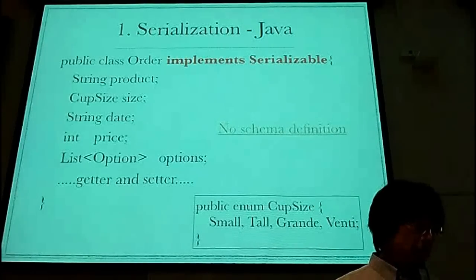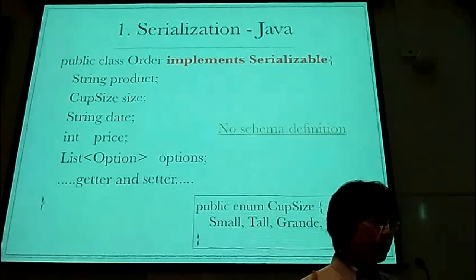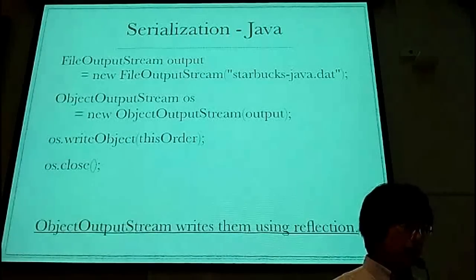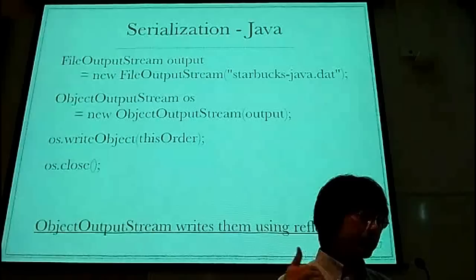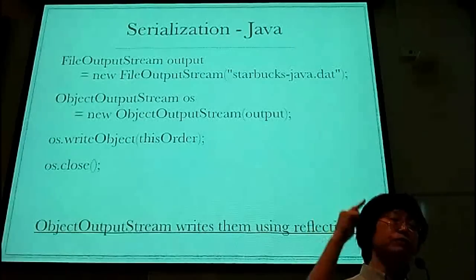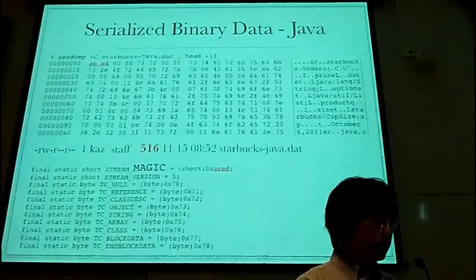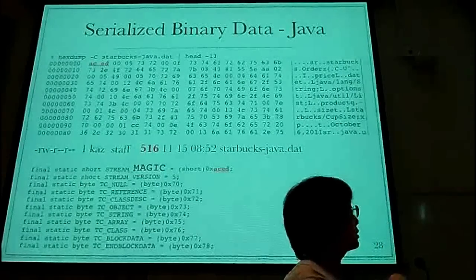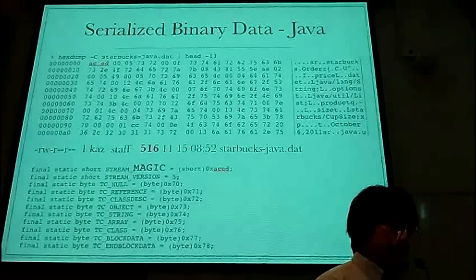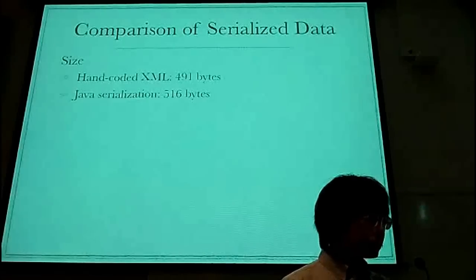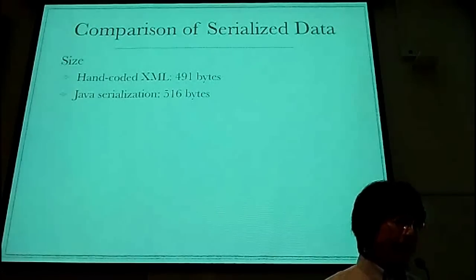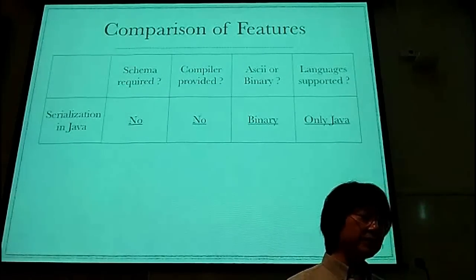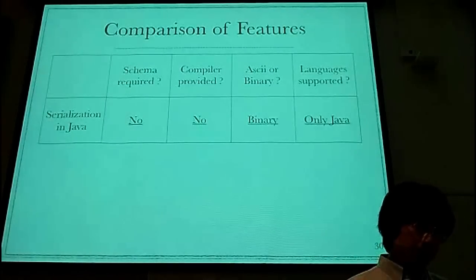The first technique is serialization in Java. Java's standard library supports serialization. We don't need schema definitions — all we have to do is write 'implements Serializable'. When a programmer writes it down to a file, you can use ObjectOutputStream. It looks up class definitions using reflection and writes a data stream. Here is a hex dump result of the serialized binary data. This binary file includes data with type information, so the size of the files is larger than 516 bytes. Schema is not required, schema compiler is not provided, binary file is supported, and only Java is supported.